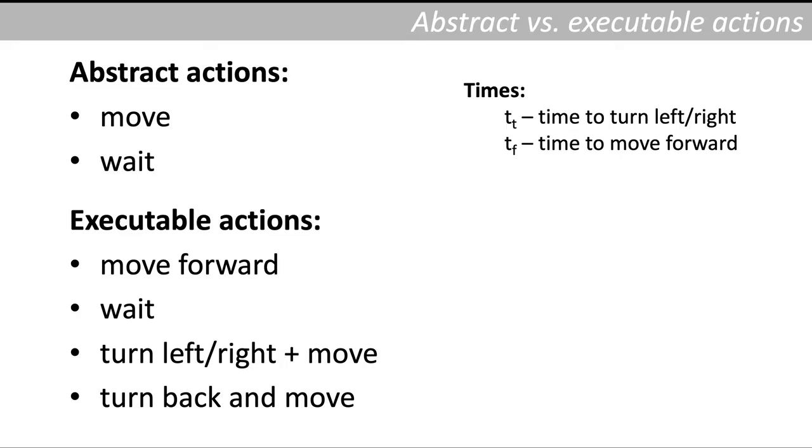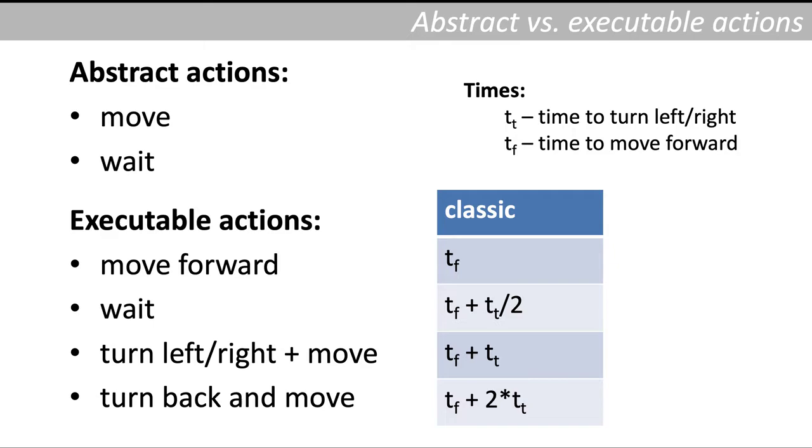Let's assume that t_t is the time needed to turn left or right by 90 degrees and t_f is the time to move forward to the next node. We can assign the best times to these executable actions. So for move forward we use t_f, while for turning left and right we use t_f plus t_t. For the waiting we can select arbitrary time. We decided to use the time somewhere between moving forward and turning left or right and moving because these are the most frequent actions used in the plan.